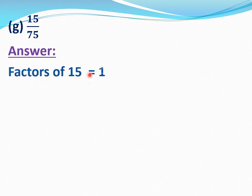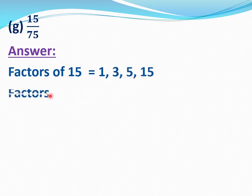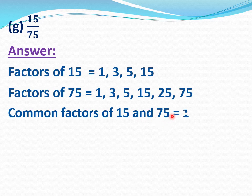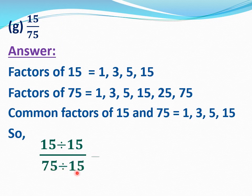Now G part, 15 by 75. We have to reduce 15 by 75 to its lowest form. Find the factors of 15 and 75. Factors of 15 equal 1, 3, 5, 15. Factors of 75 equal 1, 3, 5, 15, 25, and 75. Common factors of 15 and 75 equal 1, 3, 5, and 15. 15 is the highest common factor. We will divide 15 by 75 by 15: 15 divide 15 and 75 divide 15 equal 1 by 5. 15 by 75 equal 1 by 5; 1 by 5 is the lowest form of 15 by 75.